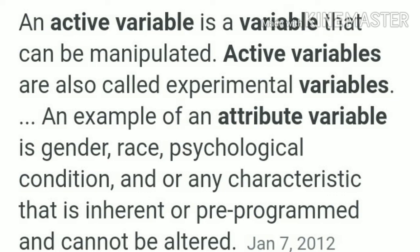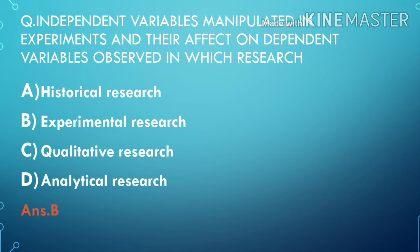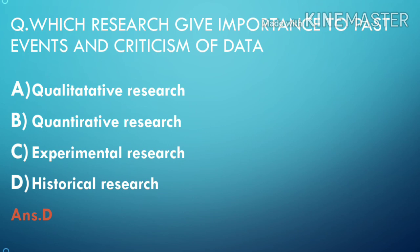I hope the portion on variables is clear. Let's move to the questions. Question one: Independent variables are manipulated in experiments and their effect on dependent variables is observed — in which type of research? Options: A) historical research, B) experimental research, C) qualitative research, D) analytical research. The answer is option B, experimental research. Question two: Which research gives more importance to past events and involves criticism of data? Options: A) qualitative research, B) quantitative research, C) experimental research, D) historical research. The answer is option D, historical research, because in historical research we consider past events and criticism of the data is done.